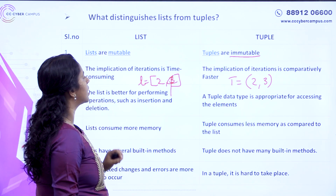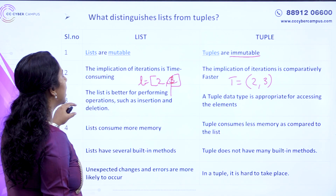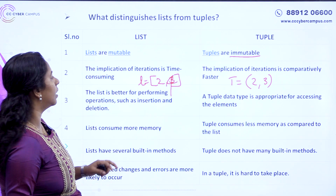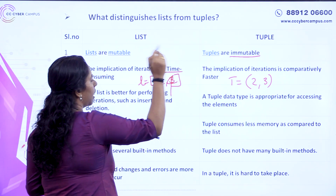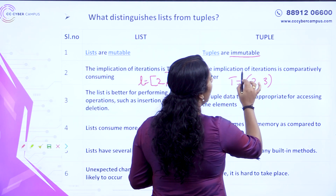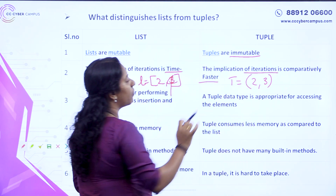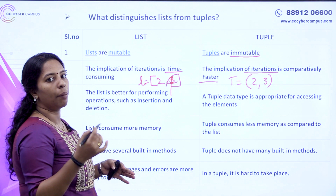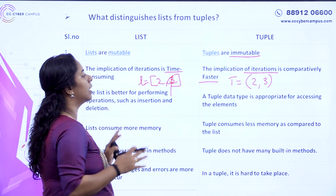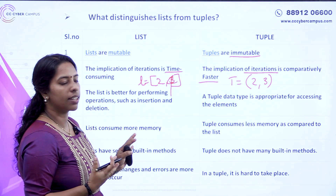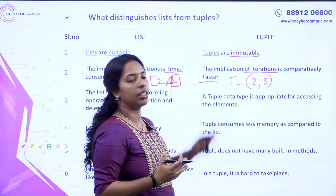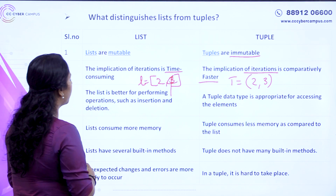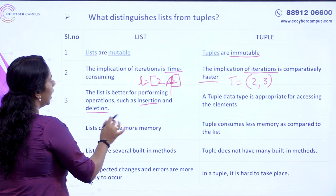The iteration of a list is time-consuming because we can change the values in a list. But in a tuple, we can perform iteration faster because there are fixed elements. So if we use a list in a tuple context, the list is better for performing operations such as insertion and deletion.